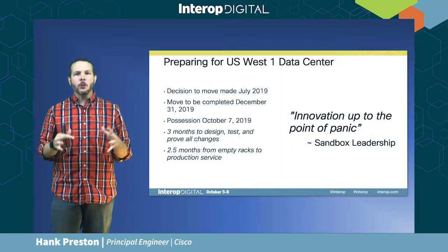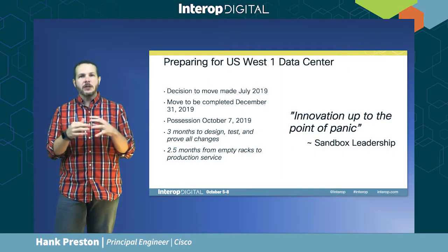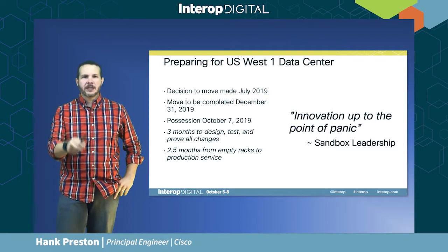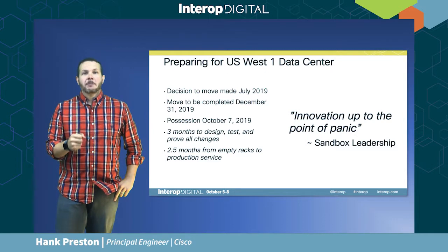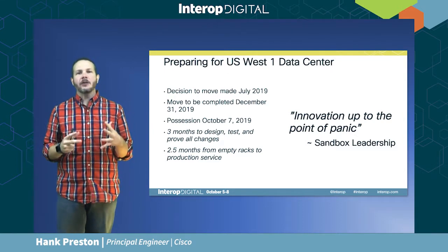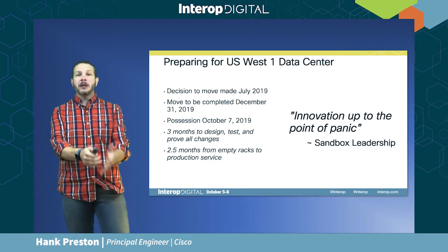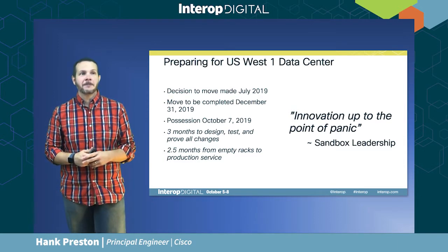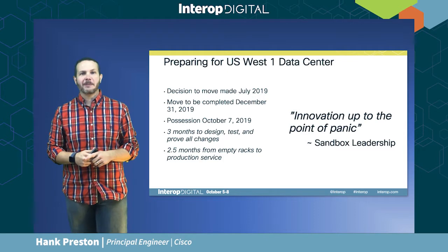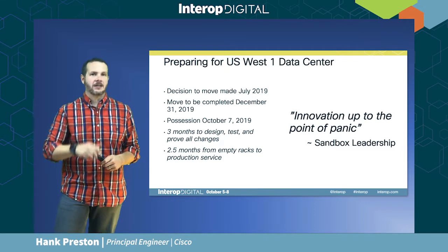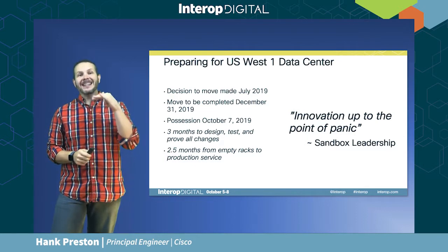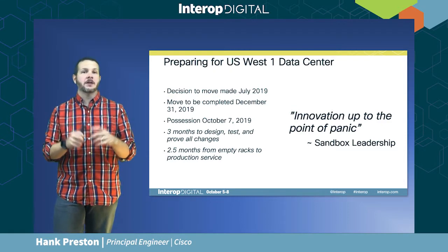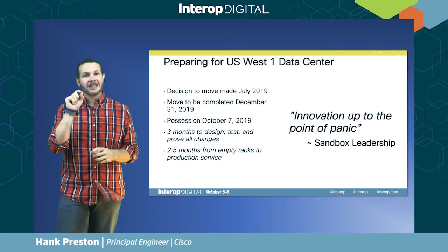Our new data center is called USW1 — US West 1 — a new colocation cage inside of another data center. We needed it for growth potential, higher reliability, and higher performance. The challenge was timing: we'd planned for this move about a year in advance, but I came back from vacation after Cisco Live US 2019 in July, and my boss said 'good news — we've been given approval to move into the new data center; bad news — we need to be done by the end of this calendar year, December 2019.'